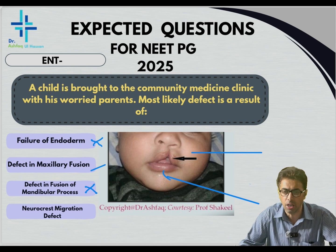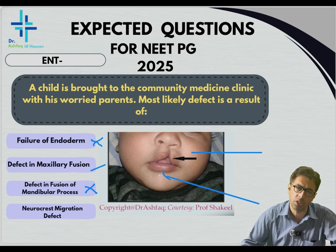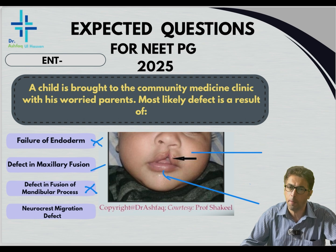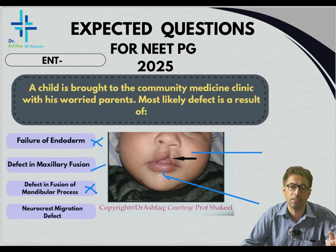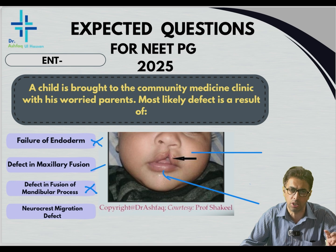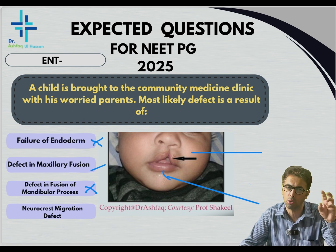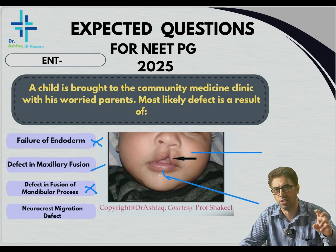Neural crest migration disorders are a different set of disorders belonging to a group called neurocristopathies, which is a subject for super-speciality. In that group come diseases like Hirschsprung's disease, failure of neural crest cells to migrate to certain areas, or pharyngeal arch defects. But here, this is a simple question with a simple answer. The correct answer is failure of fusion of maxillary processes.